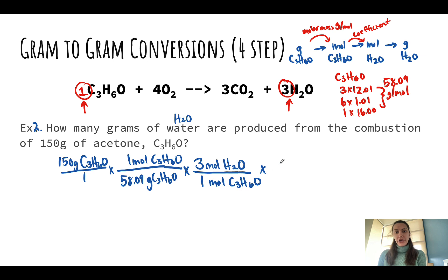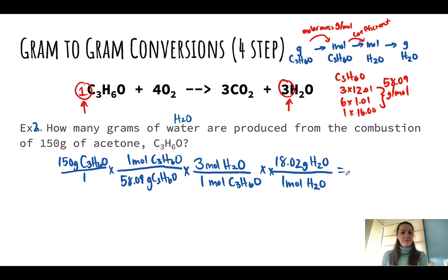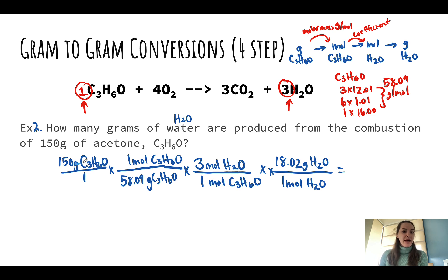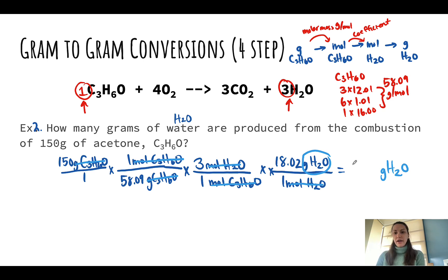Now our last step is from moles to grams again — that's going to be our molar mass. For water, the molar mass is 18.02 grams, which goes in the numerator so that one mole of water gets cancelled out in the denominator. You can see how my units will cancel out: grams of acetone cancel, moles of acetone cancel, moles of water cancel, and I'm left with my final unit of grams of H2O. When I put this on my calculator, I get 139.6 grams of H2O are produced from the combustion of 150 grams of acetone.